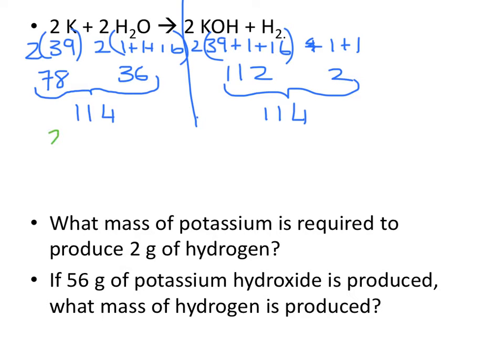The question is, what mass of potassium is required to produce 2 grams of hydrogen? Well, 2 grams was produced from 78 grams. Those two are perfectly linked, so I don't even need to do a divide or an add or a multiply or anything.